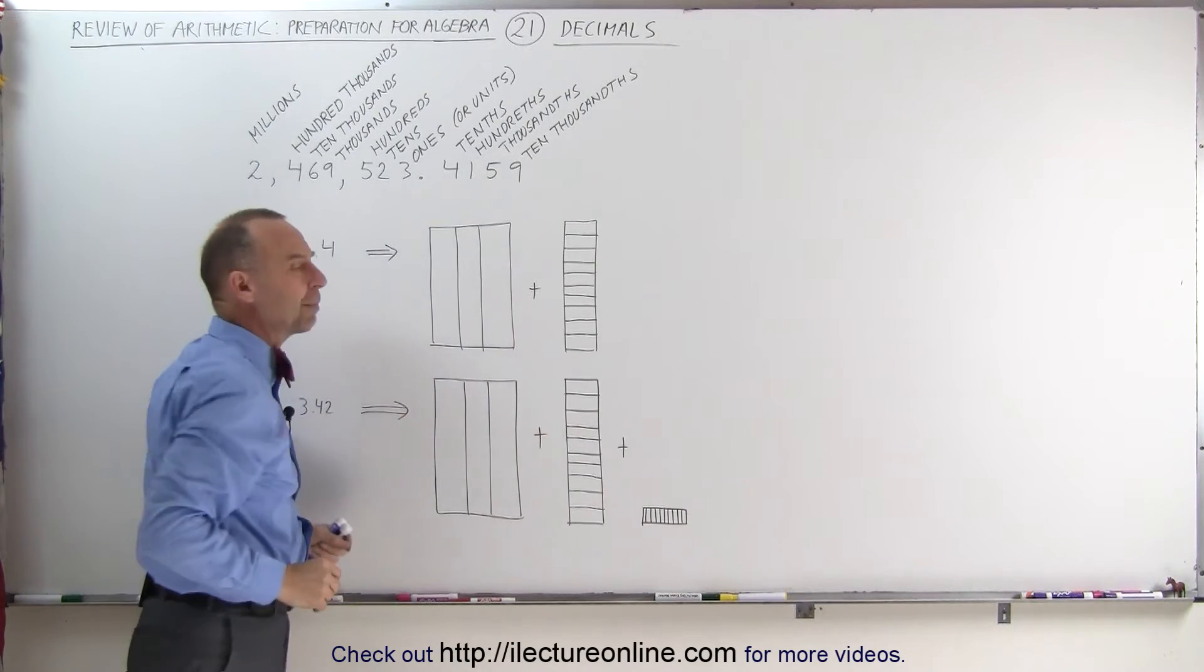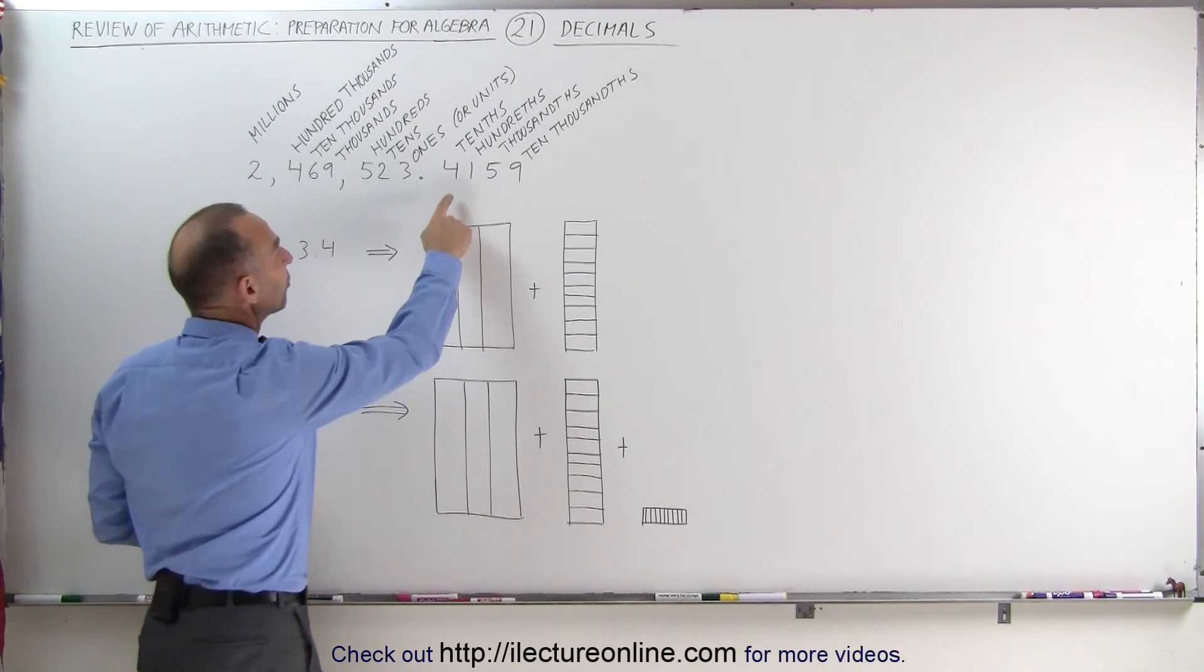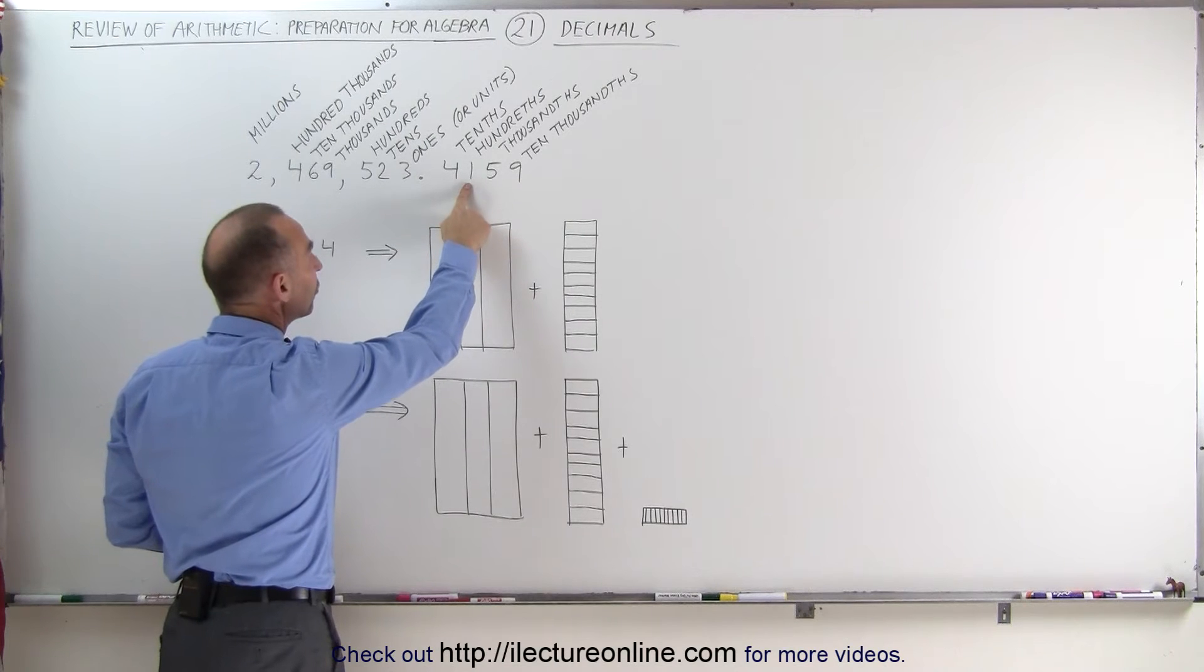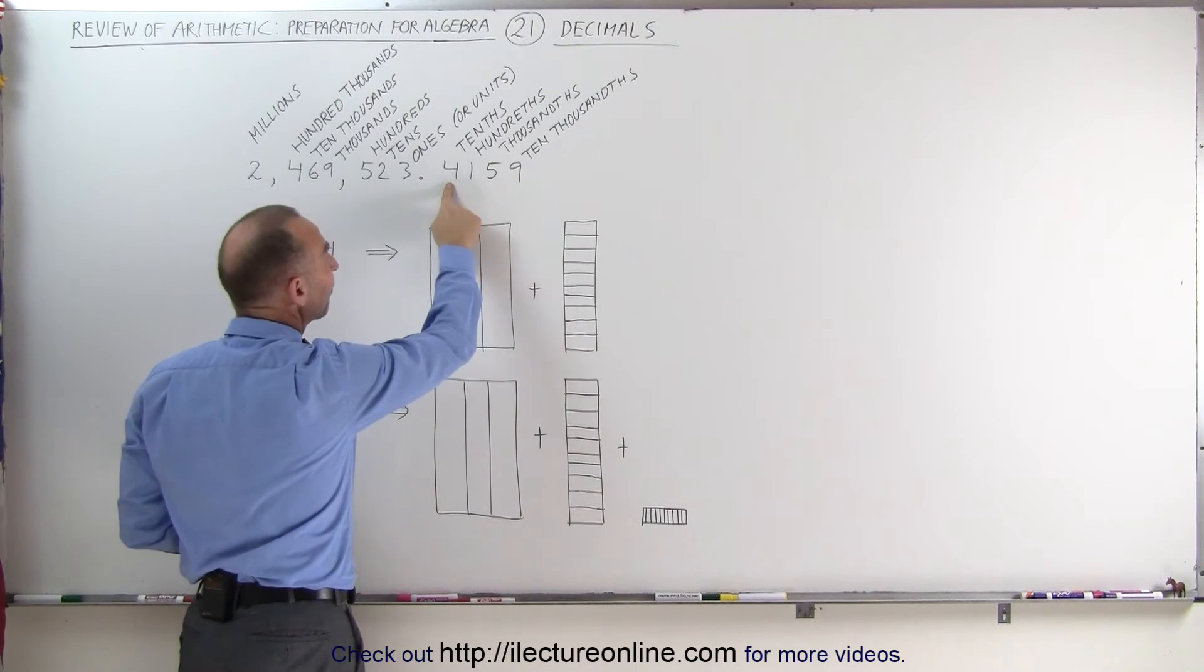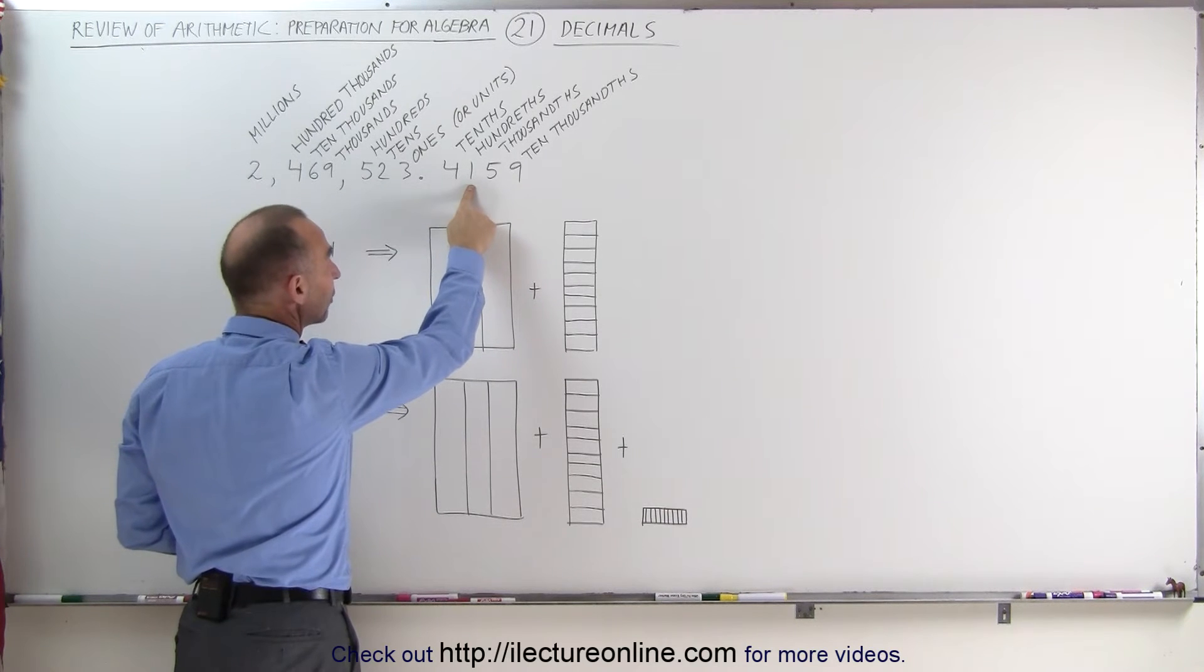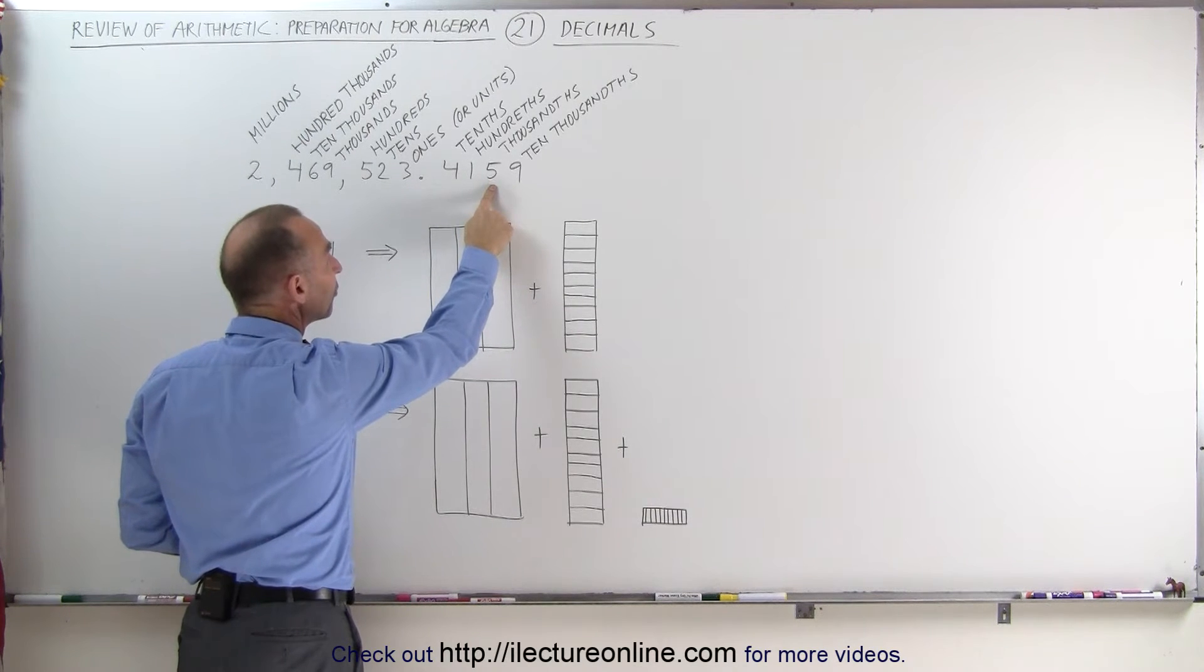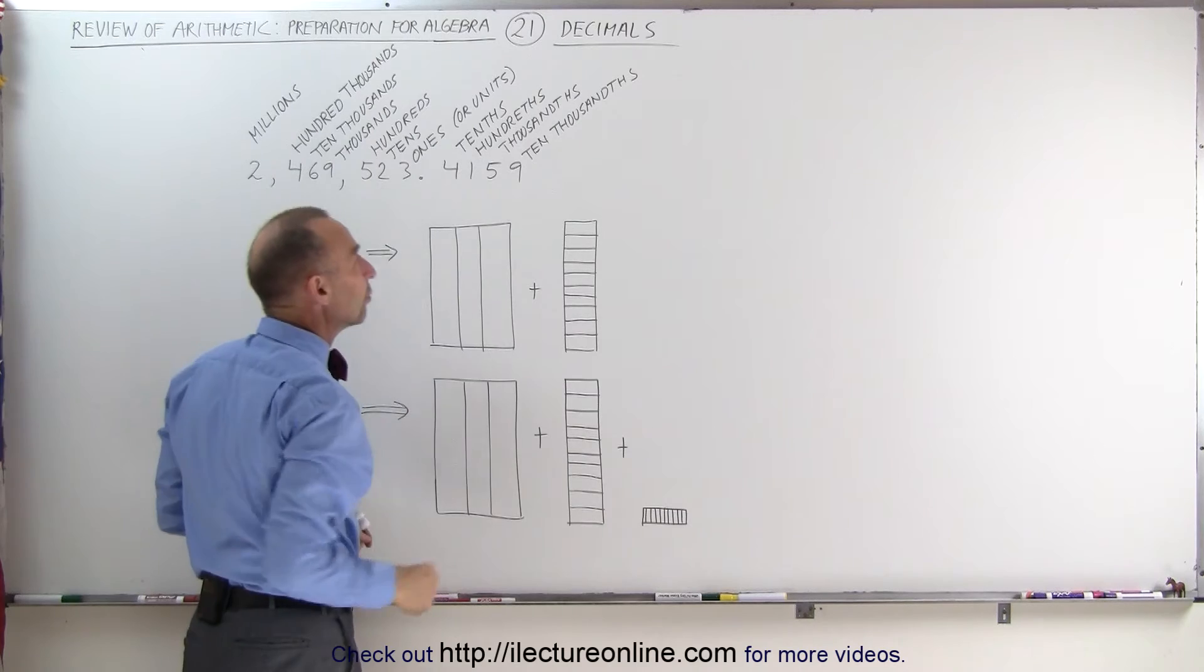Now what do these numbers represent? This represents tenths, one-hundredths, one-thousandths, and ten-thousandths. Here we have 4 tenths, 1 one-hundredth, 5 one-thousandths, and 9 ten-thousandths.